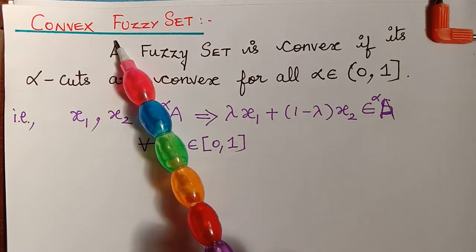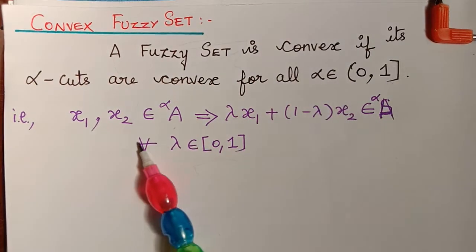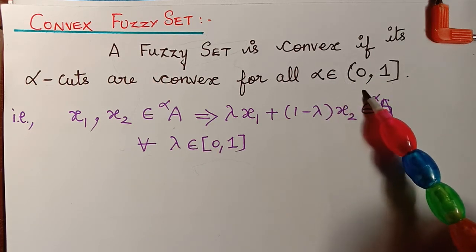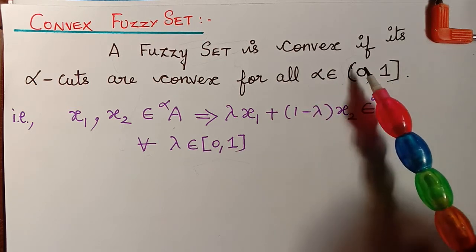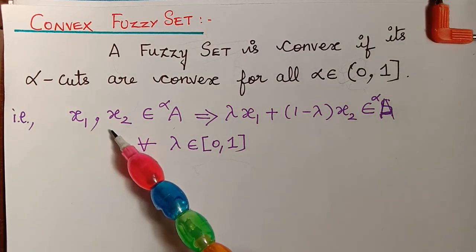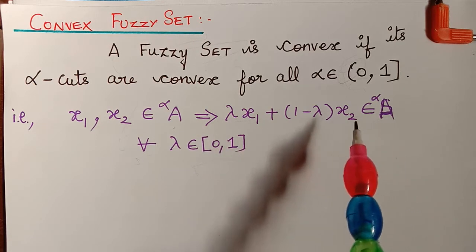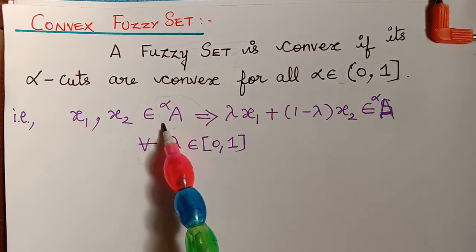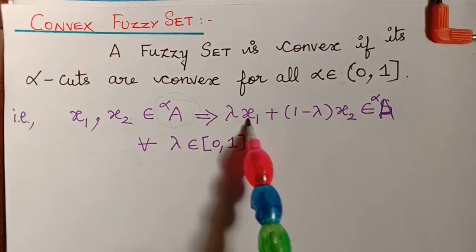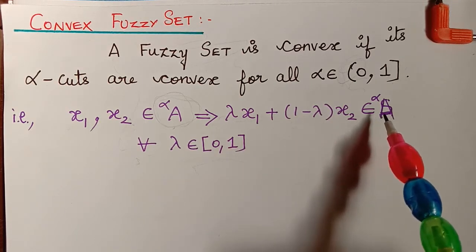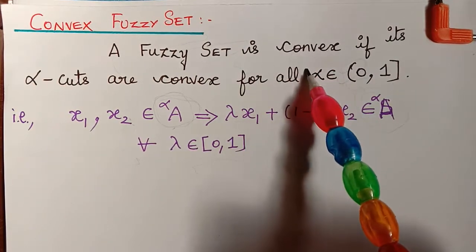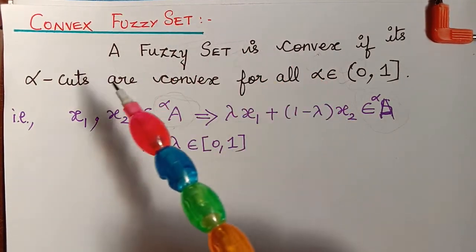Next we shall learn about a convex fuzzy set. A fuzzy set is convex if its alpha cuts are convex for all alpha in (0, 1]. By the definition of a convex set, if two elements belong to a set and the expression lambda*x1 + (1-lambda)*x2 also belongs to the same set, then that set is convex. Similarly, if we take two elements from the alpha cut of A and lambda*x1 + (1-lambda)*x2 also belongs to that alpha cut for all lambda in [0,1], then the fuzzy set itself is convex.